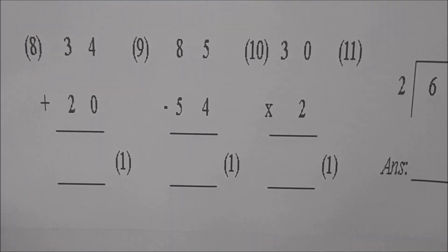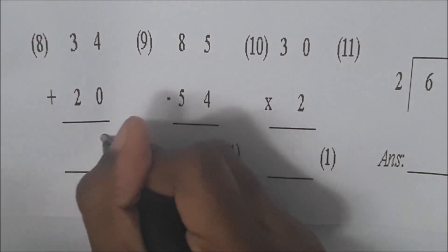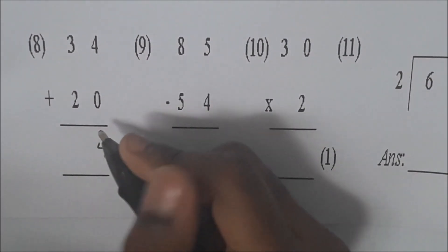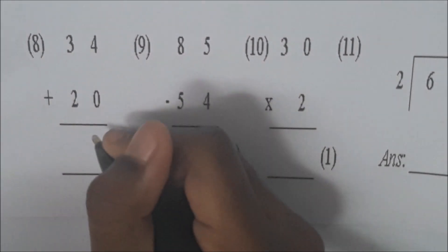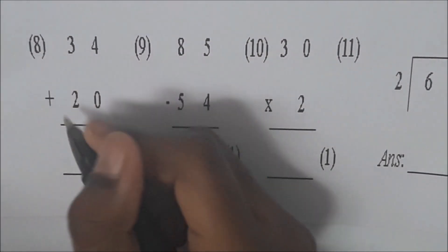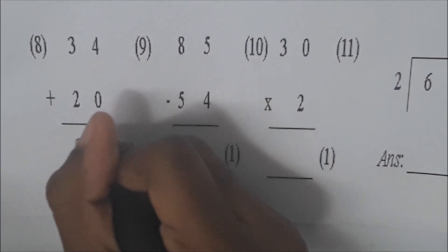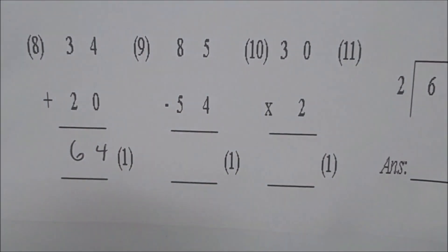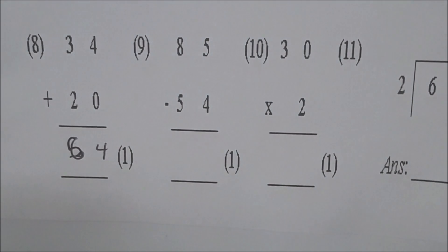Okay Sky, we're at number eight. What two numbers are we adding? Thirty-four and twenty. Tell us what you're doing. I'm adding four and zero — four and zero is four. Tell me the two numbers you're adding in the tens column. Three and two. What's the answer? Five. Very good. Make that a five. The answer is 54.